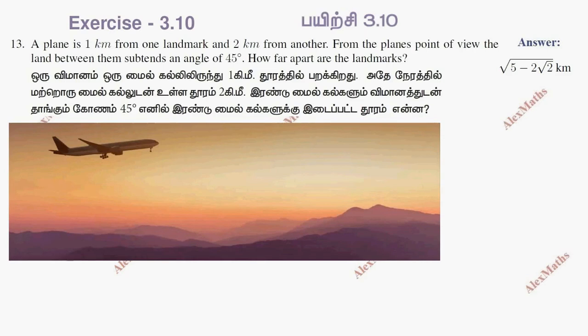Hi students, this is Alex here. Exercise 3.10, question number 13. A plane is 1 km from one landmark and 2 km from another landmark.